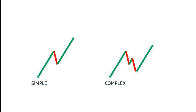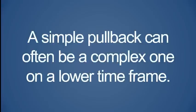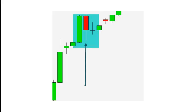These pauses in the trend — the pullbacks — can generally be either one-legged moves, which are simple pullbacks, or two-legged variations called complex pullbacks on your trading time frame. Understand that a pattern appearing as a simple pullback on your trading time frame can often be a complex one on a lower time frame, and by the same token your complex pullback can appear as a simple pullback on a higher time frame.